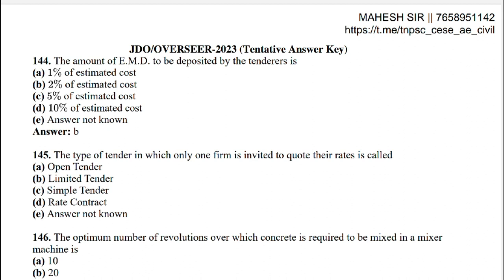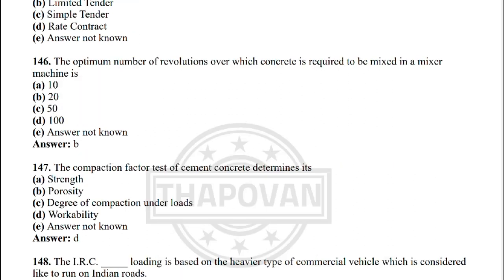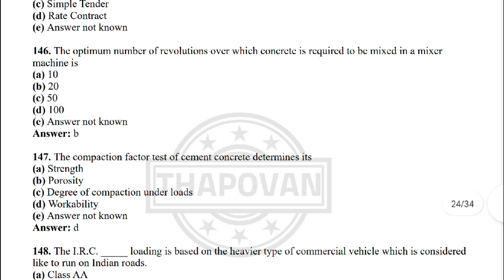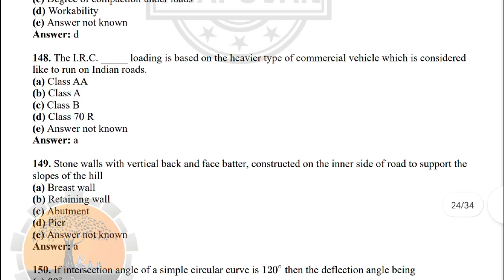Next: the type of tender in which only one firm is invited to quote their rates is called — the correct answer is option B: limited tender. Next: the optimal number of revolutions of concrete in the mixer machine — the correct answer is option B: 20. Next: the compaction factor test for cement concrete determines — the correct answer is option D: workability.